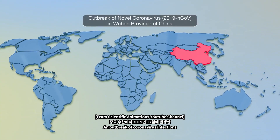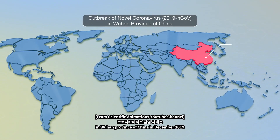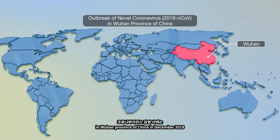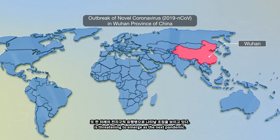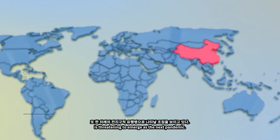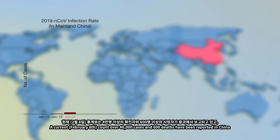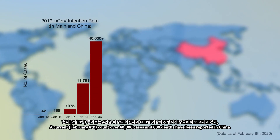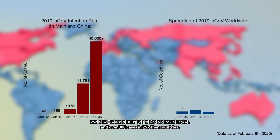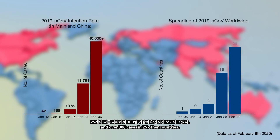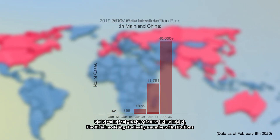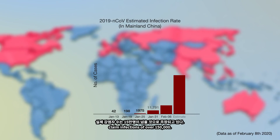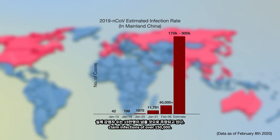An outbreak of coronavirus infections in the Wuhan province of China in December 2019 is threatening to emerge as the next pandemic. At current count, over 40,000 cases and 600 deaths have been reported in China and over 300 cases in 25 other countries. Unofficial modeling studies by a number of institutions claim infections of over 150,000.